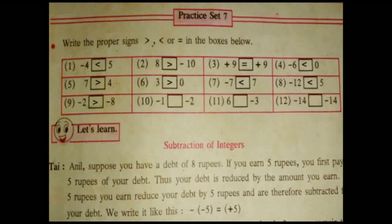Next: minus 1 and minus 2. Minus 1 is greater than minus 2, because the negative smallest number is greater than the negative biggest number. Next: 6 and minus 3 — 6 is greater than minus 3, because positive number is always greater than negative number. Next: minus 14 and minus 14 — both numbers are equal, so you have to put the equal to sign. Minus 14 is equal to minus 14.